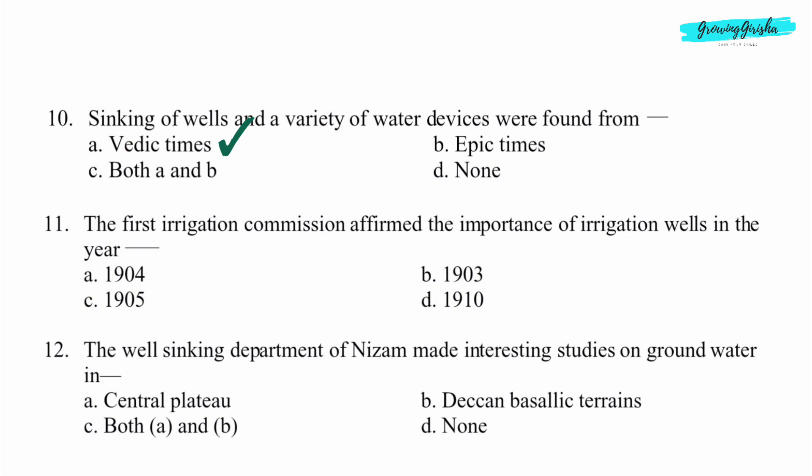Question 11. The first irrigation commission affirmed the importance of irrigation wells in the year dash. Option B: 1903.